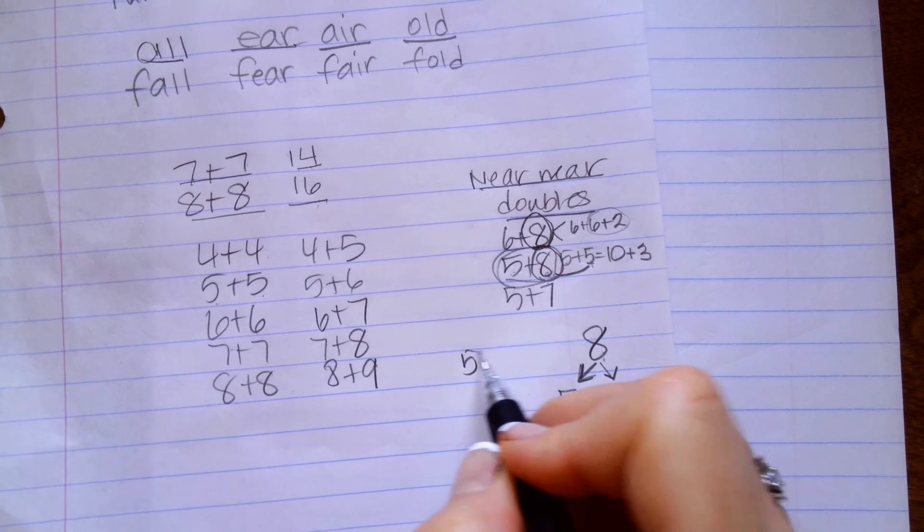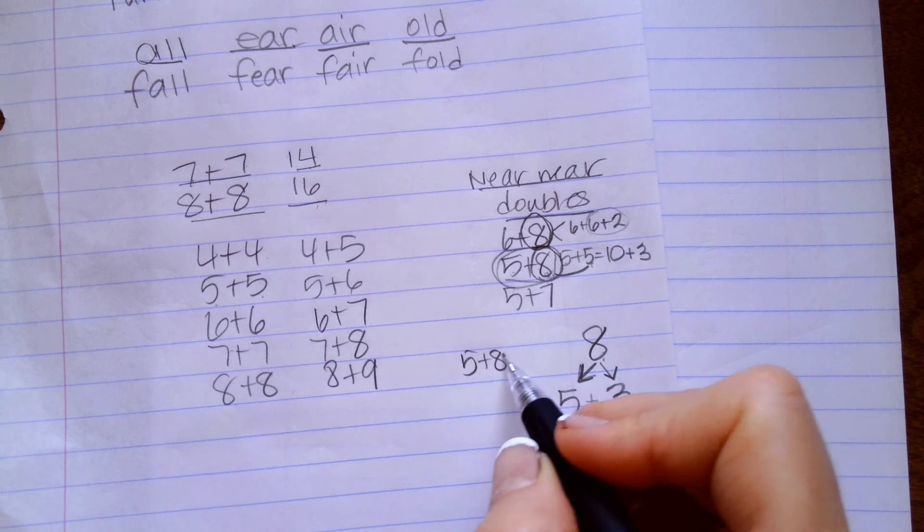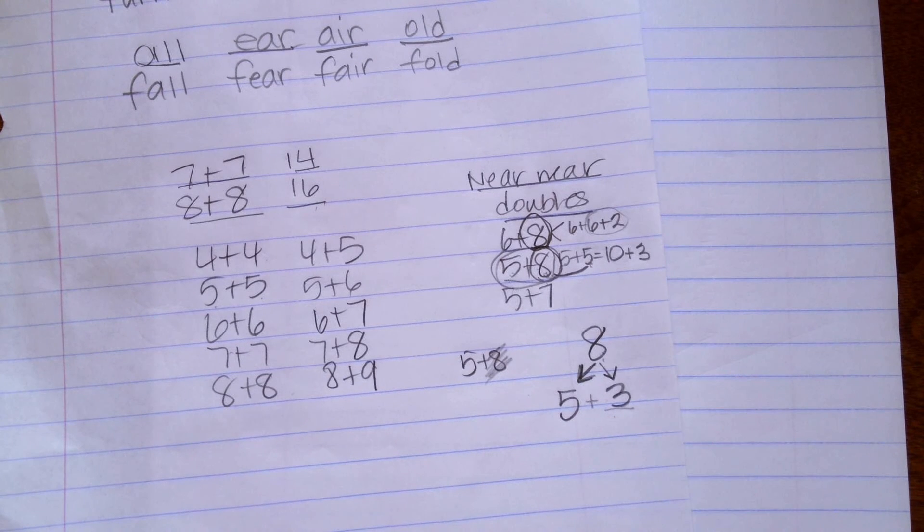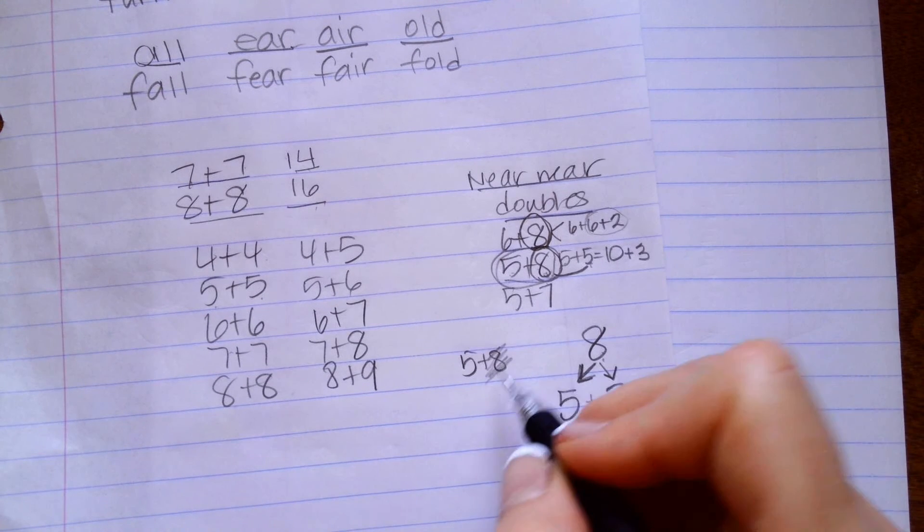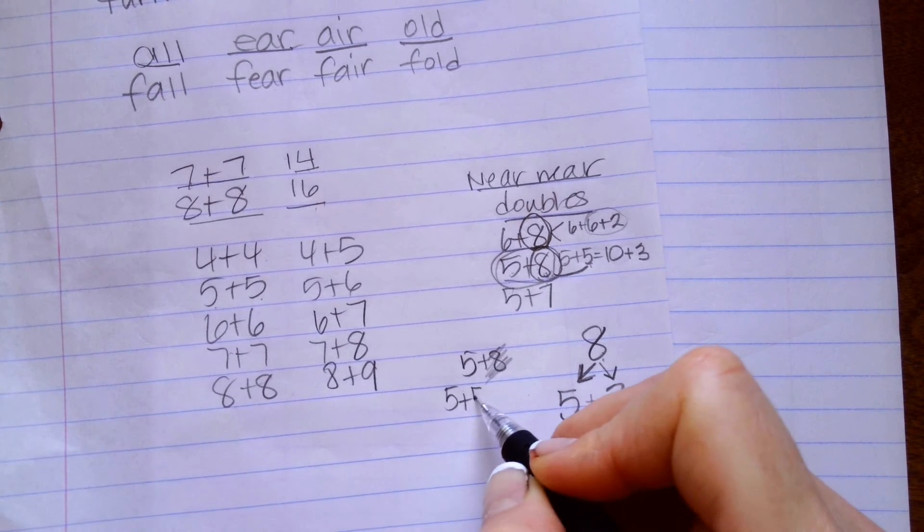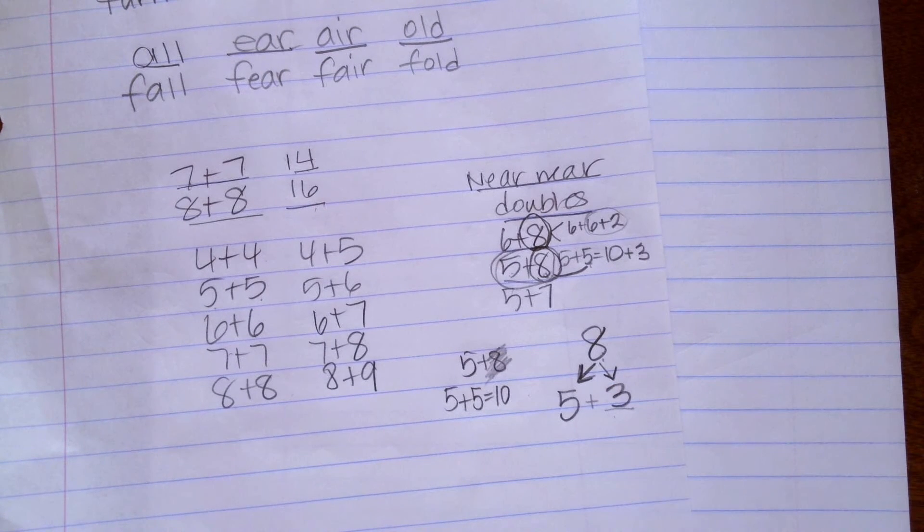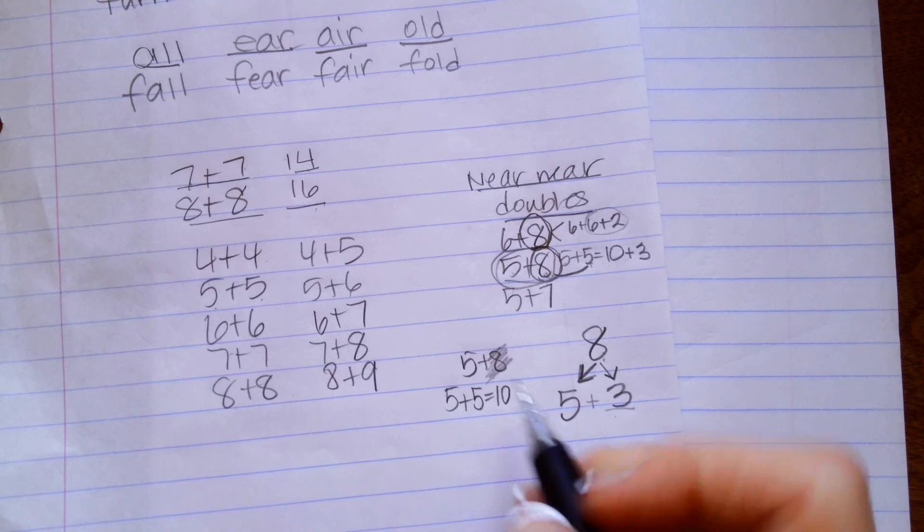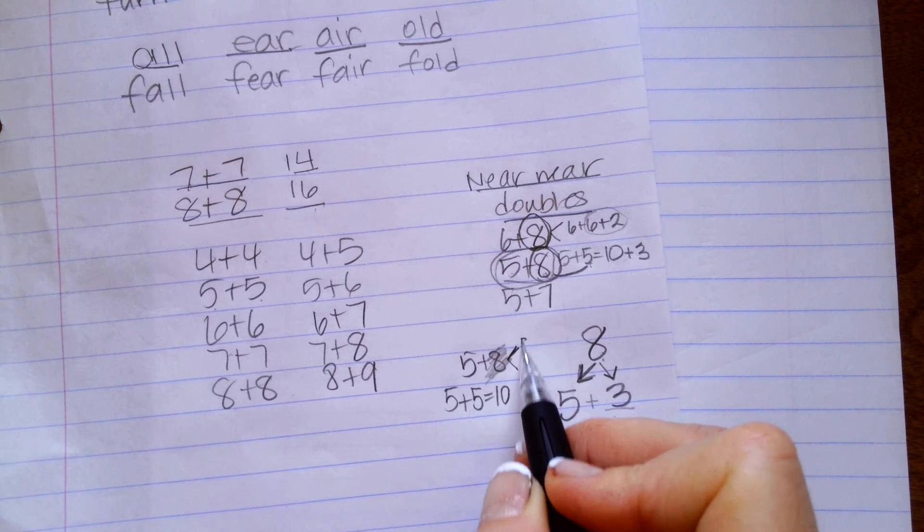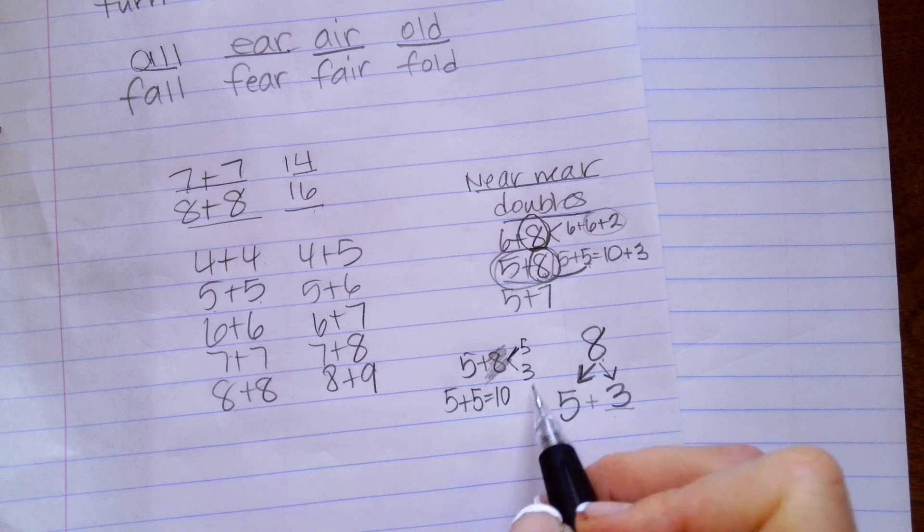yeah. I can change this to a 5 and a 3. So, basically, I have 5 plus 8, and I'm saying, I don't really want this to be 8 anymore. So, I'm going to say 5 plus 5 is 10. And I can't just erase numbers, right? But I can change this number into a 5 and a 3, which makes 8.